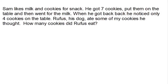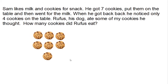The problem says Sam likes milk and cookies for snack. He got seven cookies, put them on the table, and then went for the milk. When he got back, he noticed only four cookies on the table. Rufus, his dog, ate some of my cookies, he thought. And he was right. How many cookies did Rufus eat? When we look at this problem, we see that Sam started with seven cookies and he has four now. He has less cookies, so Rufus ate some. We need to figure out how many.